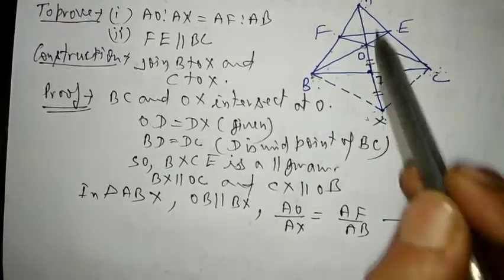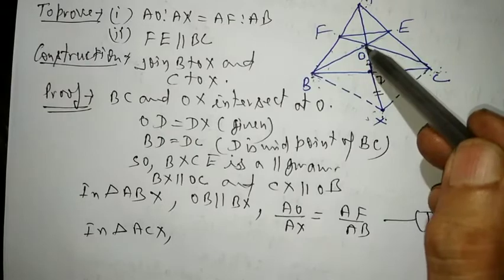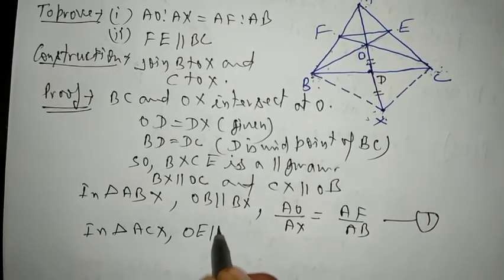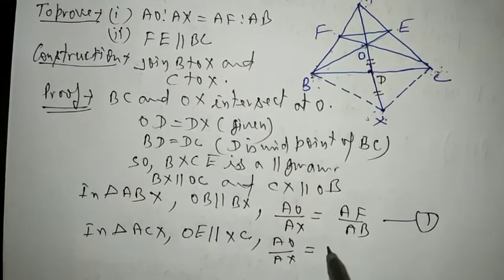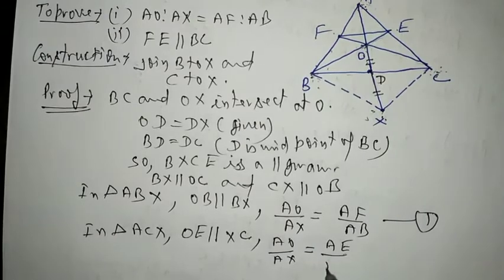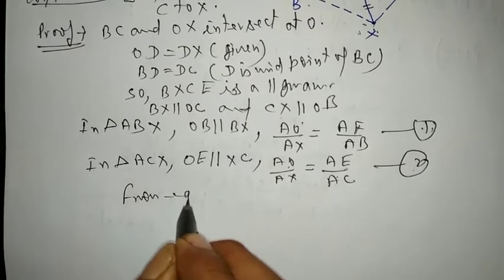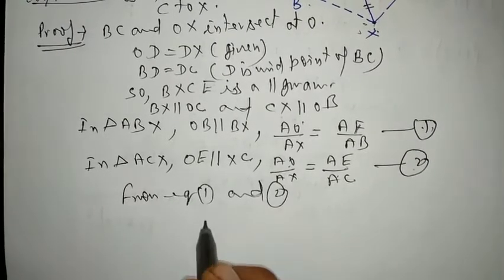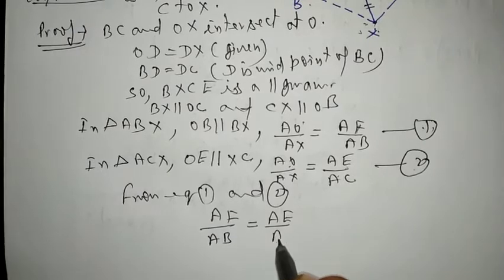Similarly, in triangle ACX, OE is parallel to XC. Therefore AO upon AX is equal to AE upon AC. This is equation 2. From equations 1 and 2, since left-hand sides are equal, AF upon AB is equal to AE upon AC.